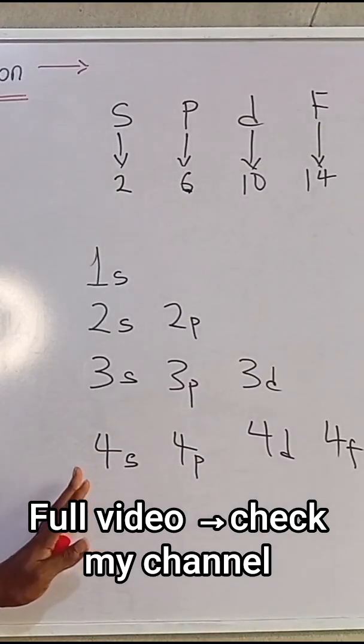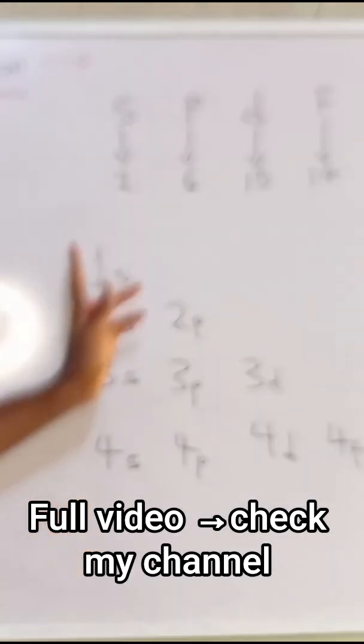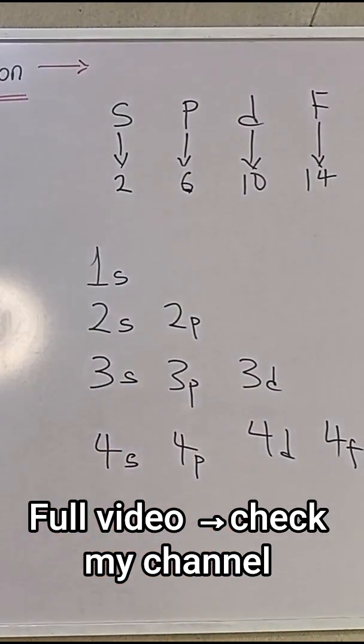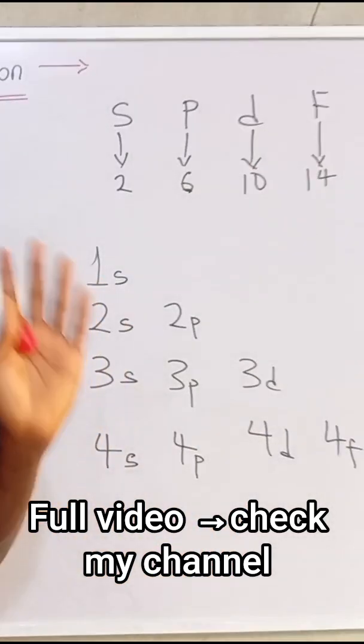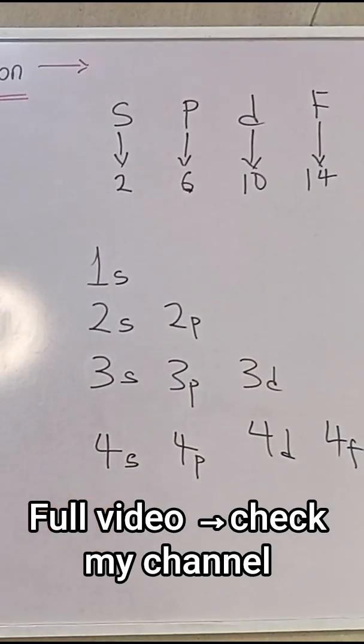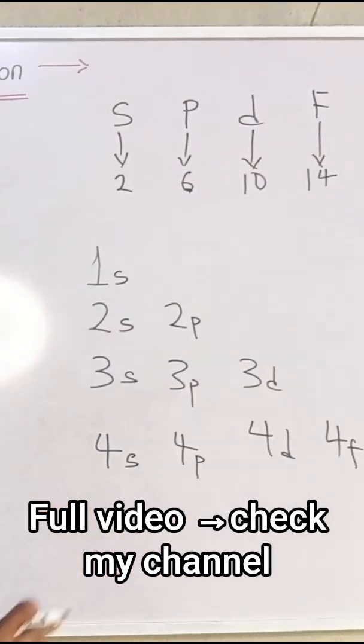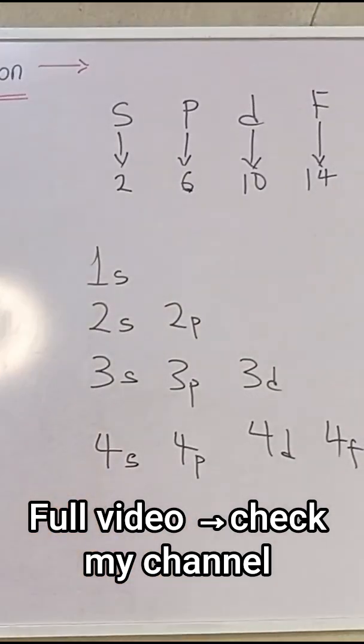Now with this information, we can literally write any electron configuration we want to write of any atom or ion. Now this can go more than this, we can go to five energy level, six energy level, seven energy level, but basically most...